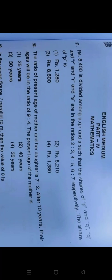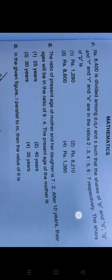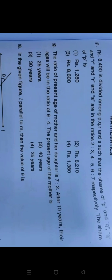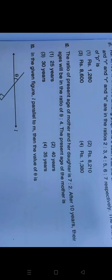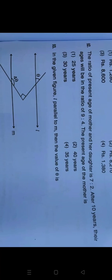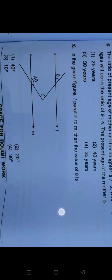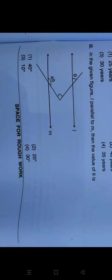Question 91: the correct answer is option number 1, that is 1280. Question 92: the correct option is 35 years, so option number 4 is your correct answer. Question 93: the correct option for this question is 30 degrees, that is option 4.